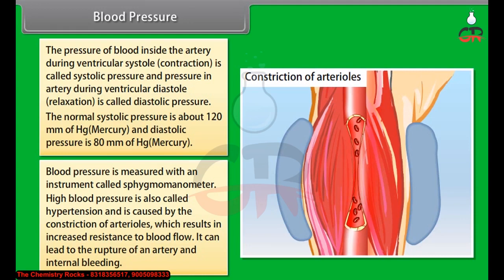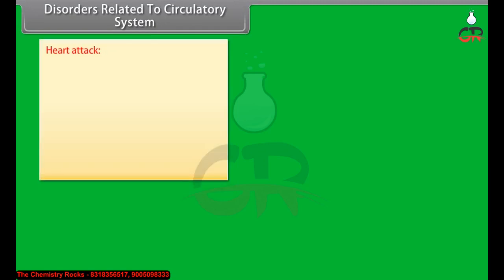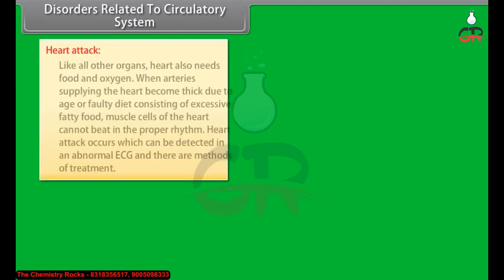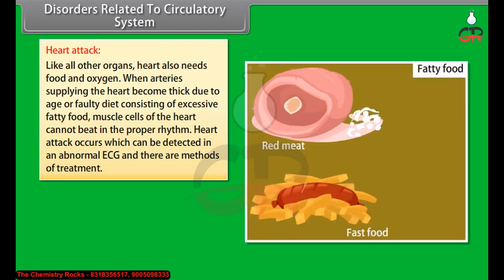High blood pressure is called hypertension and is caused by the contraction of arterioles, which results in increased resistance to blood flow. It can lead to the rupture of an artery and internal bleeding. Like all other organs, the heart also needs food and oxygen. When the arteries supplying the heart become thick due to age or a faulty diet of excessive fatty food, muscle cells of the heart cannot beat in the proper rhythm, and a heart attack occurs, which can be detected by an abnormal ECG.